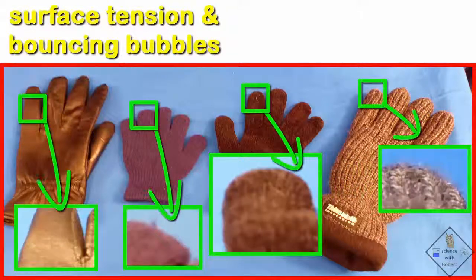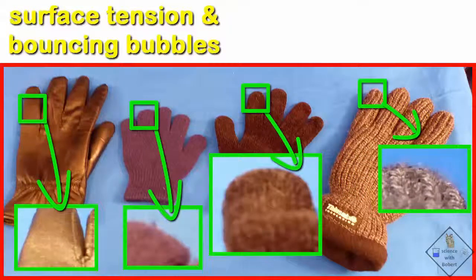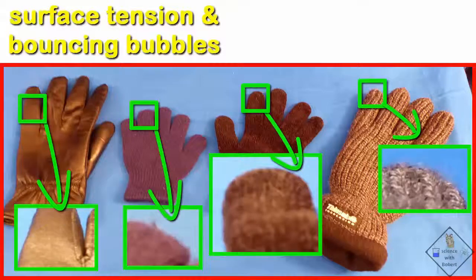Cotton gloves have extremely small organic fibers coming from their surface, and it is these very small water repellent fibers that will come into contact with a bubble. Such a cotton glove is going to create a very bouncy environment for bubbles.